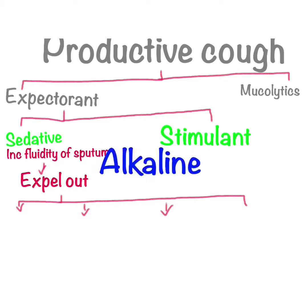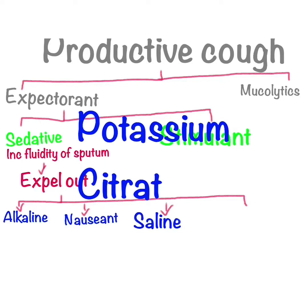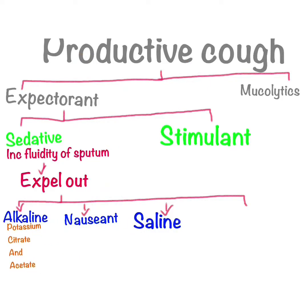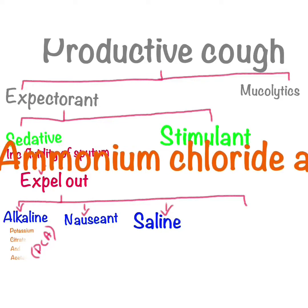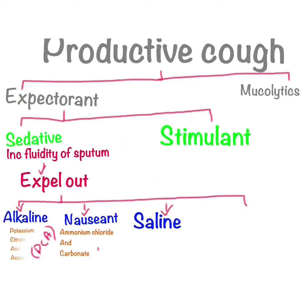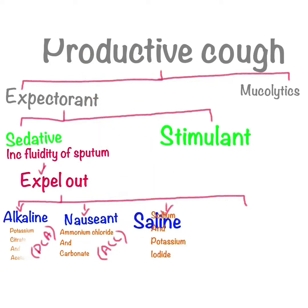Sedative expectorants stimulate secretory cells in the respiratory airway to increase mucus secretion, increasing the fluidity of sputum so it is easily expelled. They are divided into three categories: alkaline expectorants, nauseous expectorants, and saline expectorants. Alkaline expectorants stimulate the bronchial gland to produce more mucus that is thinner and less sticky; examples are potassium citrate and acetate. Nauseous expectorants stimulate sensory nerve endings and bronchial secretions; an example is ammonium chloride carbonate, remembered by the mnemonic ACC. Saline expectorants directly stimulate bronchial secretory cells to produce less viscous secretions; examples are sodium and potassium iodide, remembered by the mnemonic SPI.